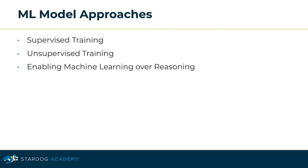There are different machine learning model approaches to build and train a machine learning model, and we support all three in Stardog: supervised training, unsupervised training, and enabling machine learning over reasoning. Next, we're going to showcase these approaches using Stardog by example.